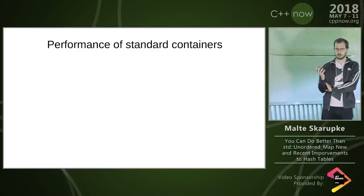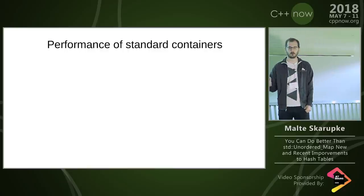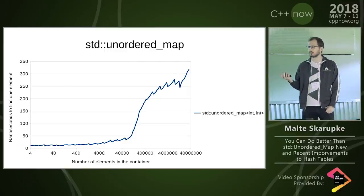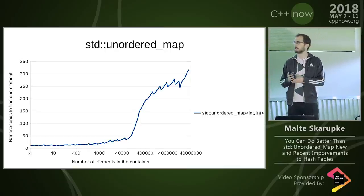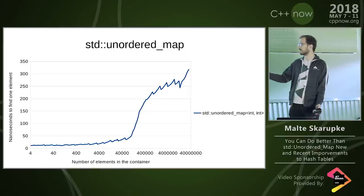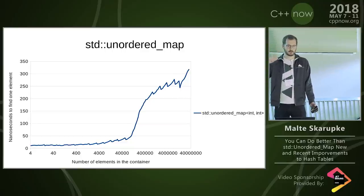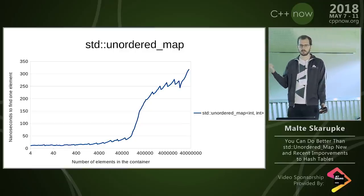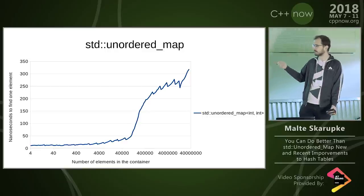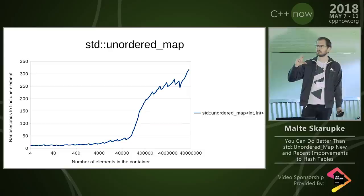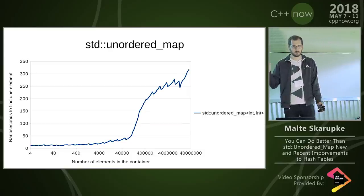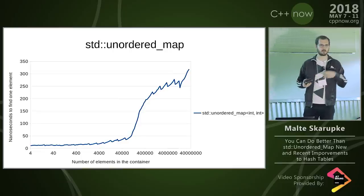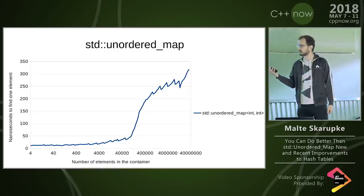As a baseline, I'd like to measure the performance of the standard containers including the ordered ones. Here is a graph measuring the lookup time in a standard unordered_map. I created a benchmark where I create an unordered_map of a certain size — the sizes are on the x-axis — and then in a loop I'm calling find over and over again, looking up keys that are actually going to be in this map. These are all successful lookups. I measure how long the loop takes and divide by the number of iterations to get the average lookup time.